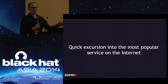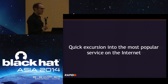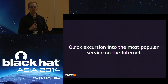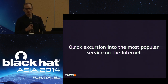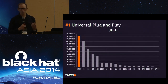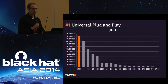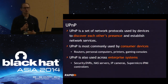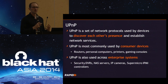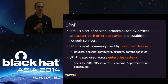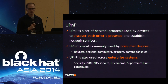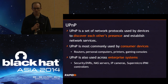A quick excursion into the most popular service on the internet. A lot of people would assume this is HTTP — web servers, websites. But it turns out the most widespread protocol and service you find on the internet is actually UPnP, Universal Plug and Play. It's a set of network protocols used by devices to discover each other and configure each other, mostly used by consumer devices but also found in servers, switches, and so on.